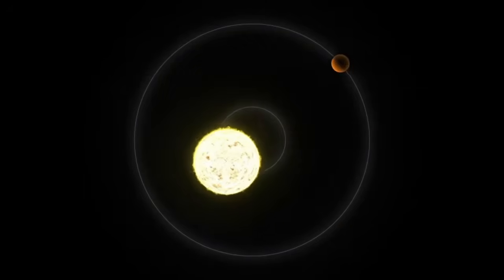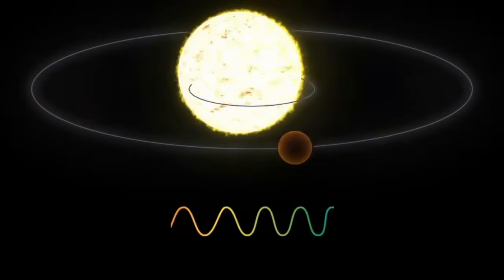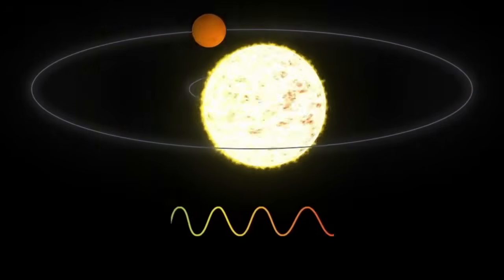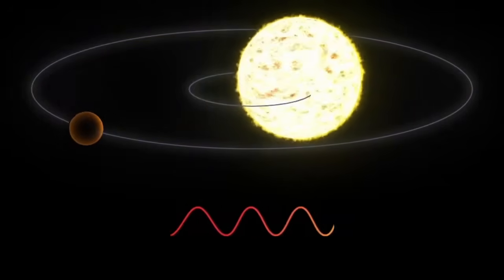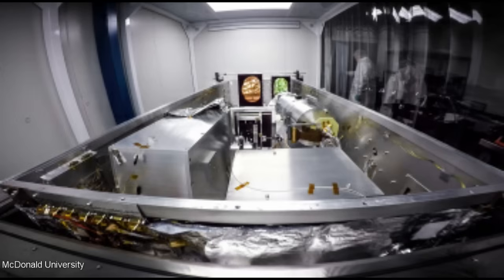As a planet tugs on its star, that star wobbles slightly toward and away from our line of sight, creating a minute red and blue shift. This shift is too minuscule to observe directly, but can be seen in a star's spectrograph, the rainbow of colors that comprise its light, deconstructed by a prism. Gliese 251 has spectrographic records going back to 1997, but it was the Habitable Zone Planet Finder, a spectrograph at the McDonald Observatory in Texas, that did the lion's share of the work.